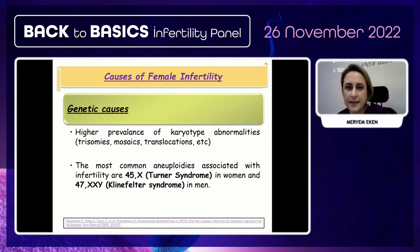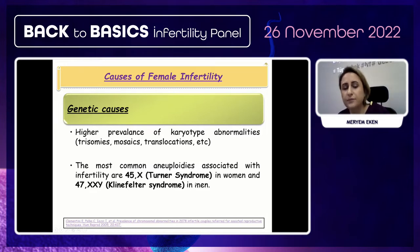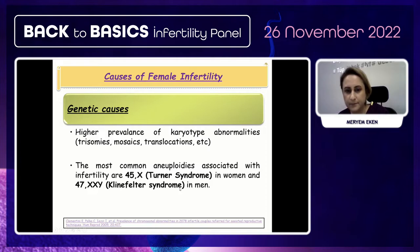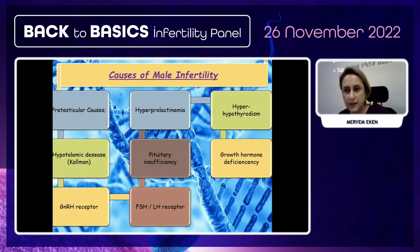Regarding genetic causes, the most common chromosomal abnormalities associated with infertility are Turner syndrome in women and Klinefelter syndrome in men — both result in sterility.